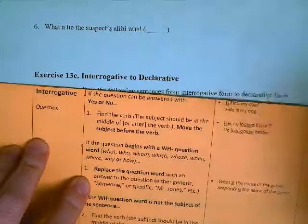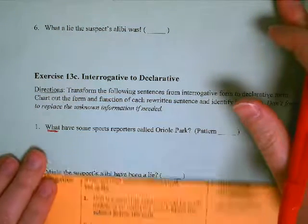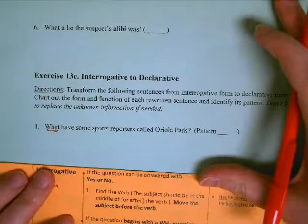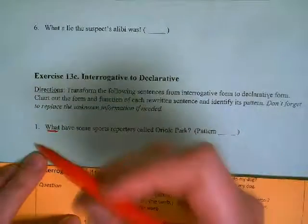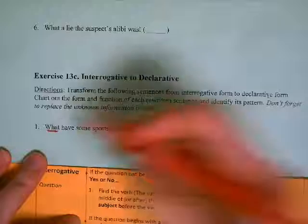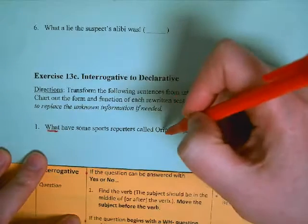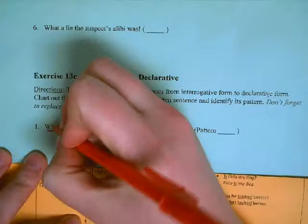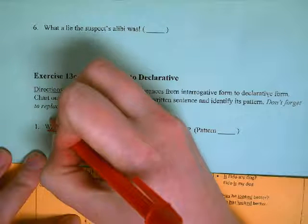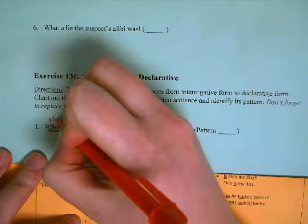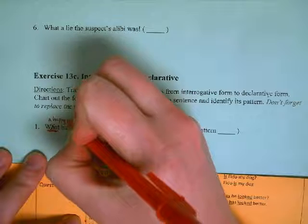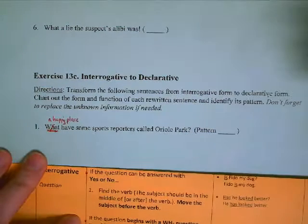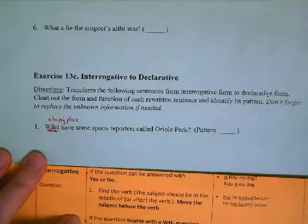It can be a generic like someone, something, somehow, somewhere, or you can make up a specific one. It doesn't really matter. Either will be fine. Just be aware that whatever you make up, you're going to need to chart out, so simpler is sometimes easier. 'What had some sports reporters called Oriole Park?' Just answer the question. Well, they've called it a happy place.